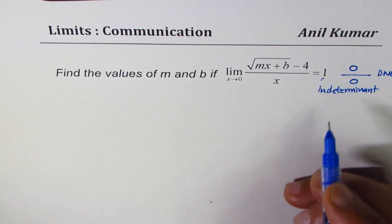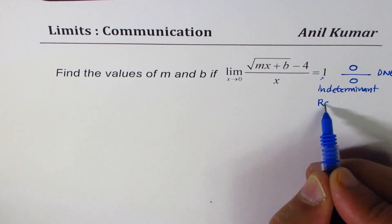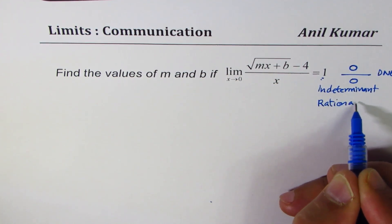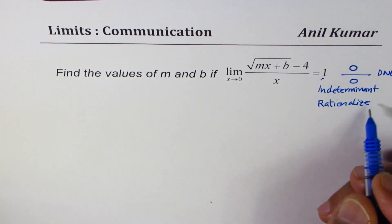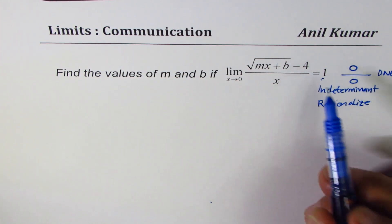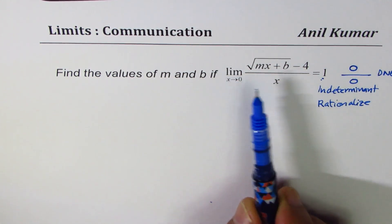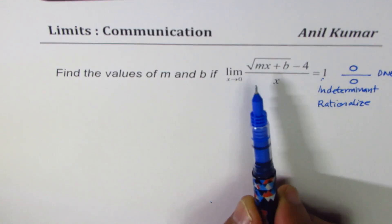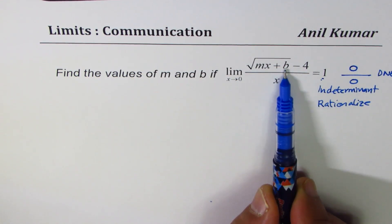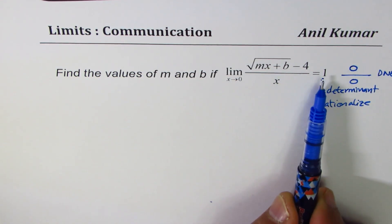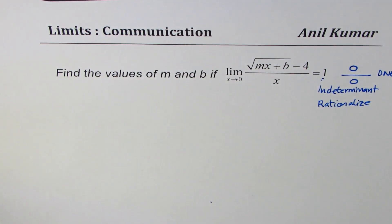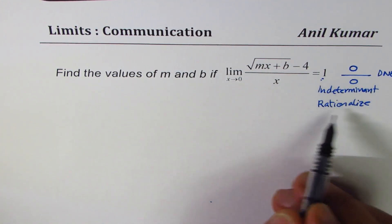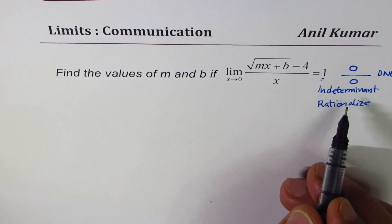In that case we get what we call an indeterminate form — 0 over 0. When we have a 0/0 indeterminate form, the strategy is to rationalize and find the limit. So we should rationalize this function and then see what values of m and b can result in a limit of 1.